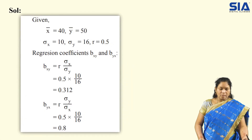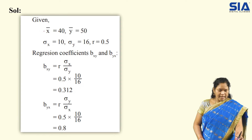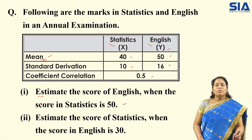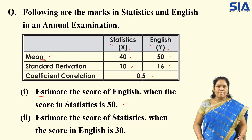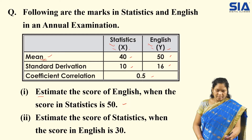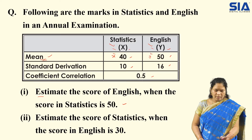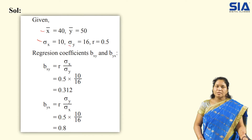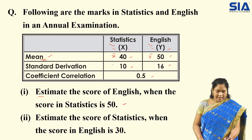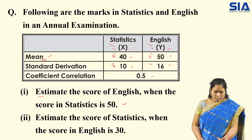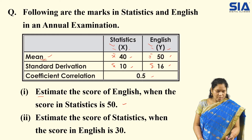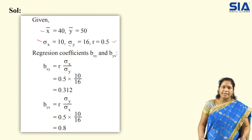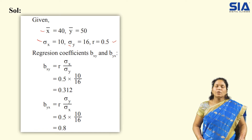They will not specify directly whether it is a regression equation x on y or y on x. By checking the question we need to identify it ourselves. Here is the solution. Given values: x̄, ȳ — mean is always x̄ and ȳ. Mean for x is 40, so x̄ = 40, and ȳ = 50. Next, standard deviations: σx and σy. Leftover is correlation coefficient r. All the values are identified.